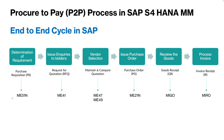We saw that six steps are involved in this particular process: creation of a purchase requisition, then creation of RFQs, then maintaining the quotations and comparing them, then creation of purchase order, goods receipt and invoice receipt. Today we'll see the end-to-end cycle in SAP — how we can post all these documents and how the document flows from one step to the next.